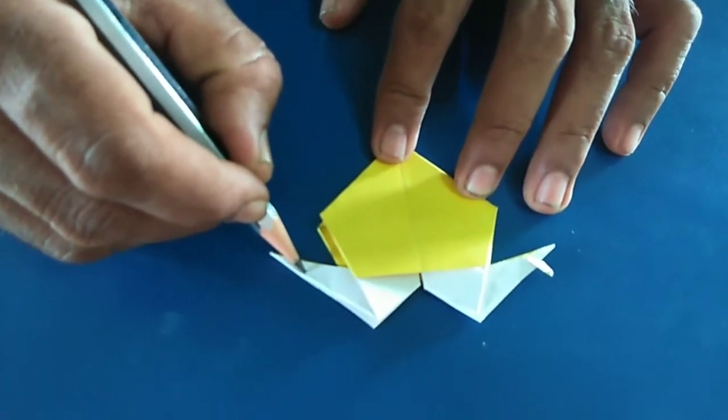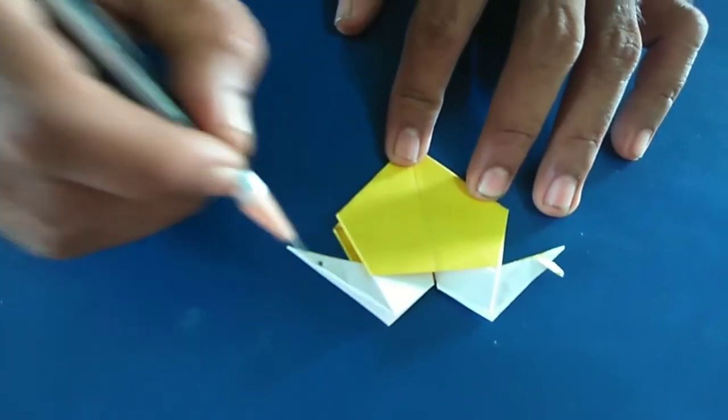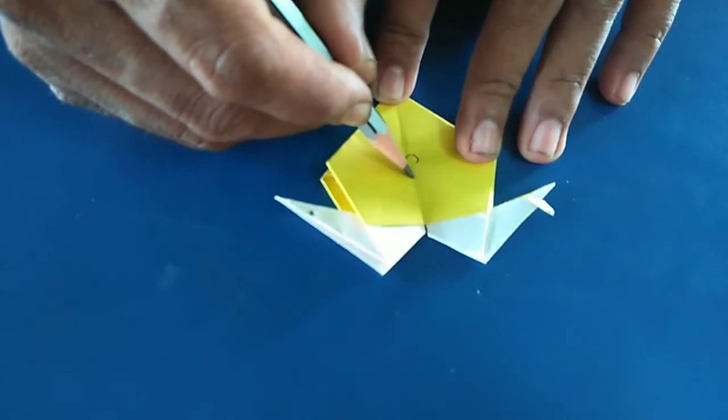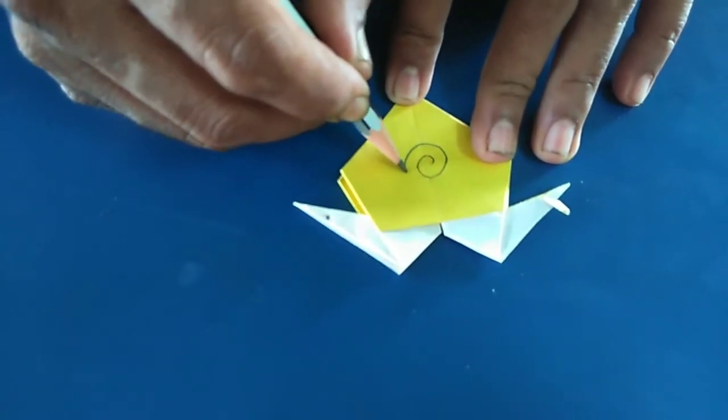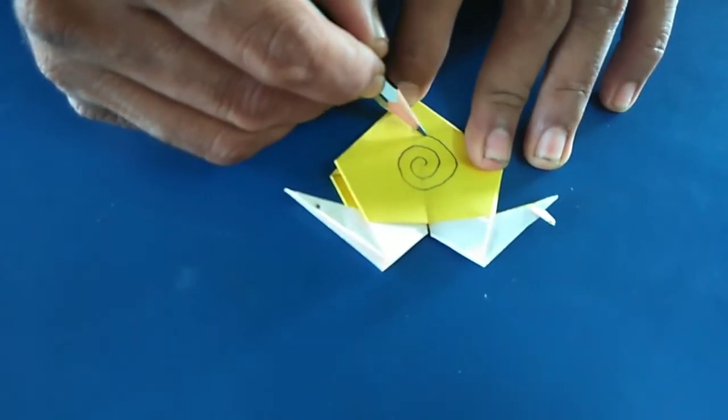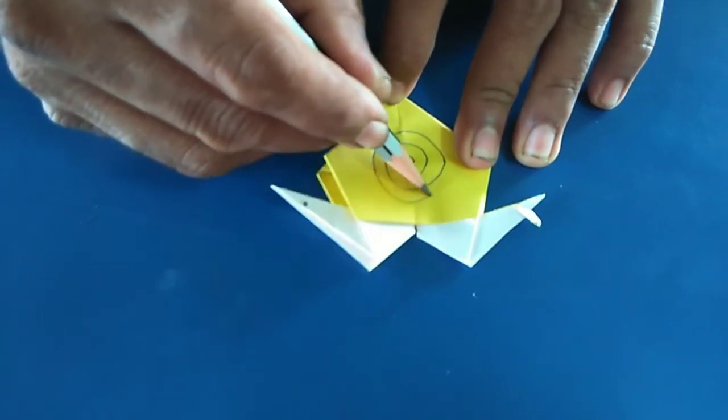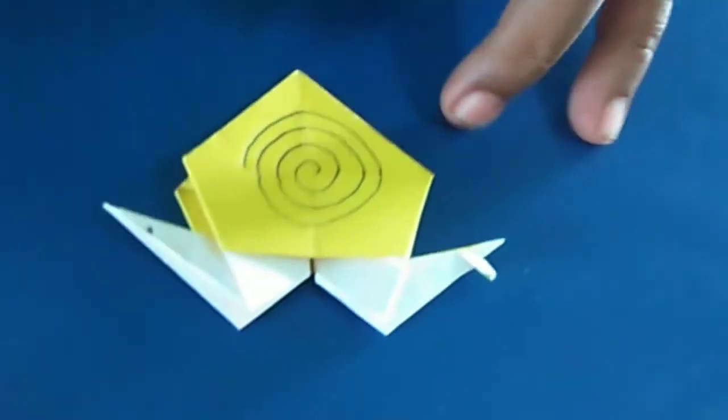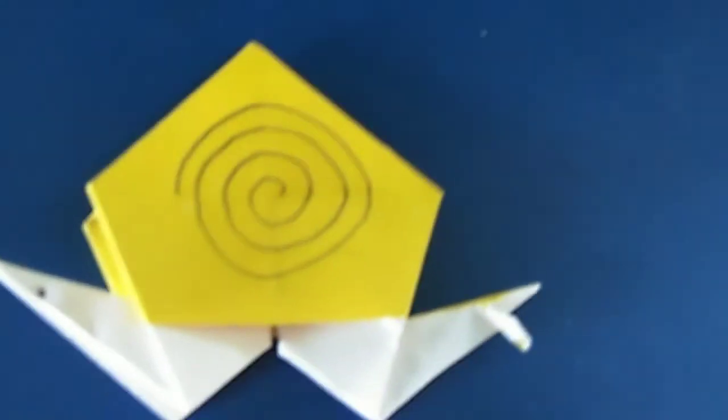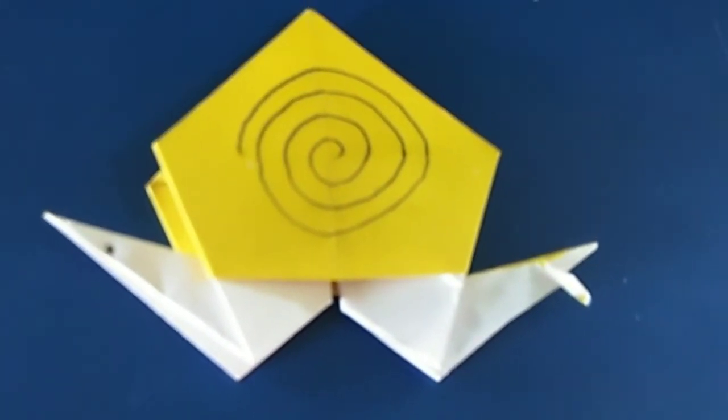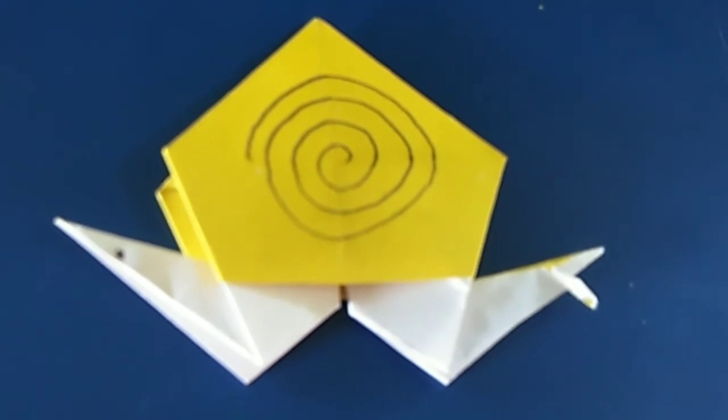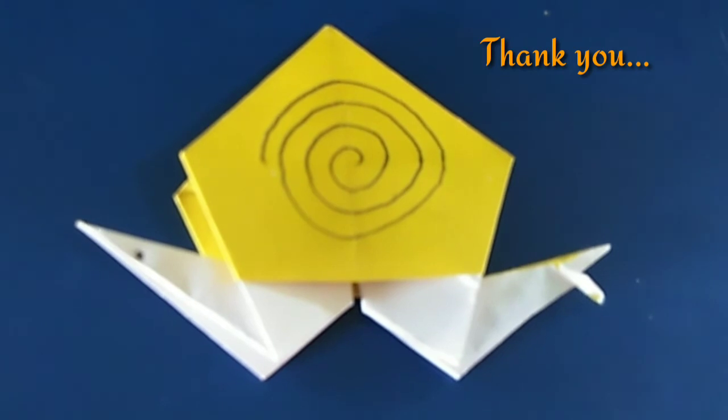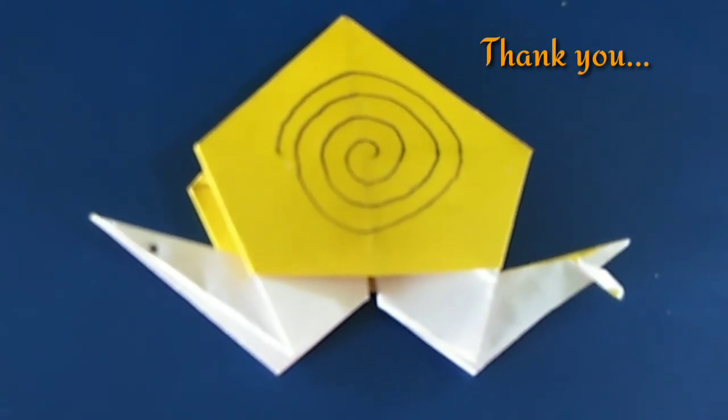Now draw the eyes for snail and spiral shape you have to draw. Spiral shape. Yes, then now our snail is complete. You have to make it neatly and draw the spiral shape. Okay, thank you. Have a nice day. Bye bye.